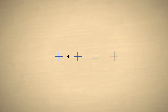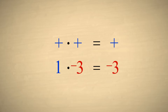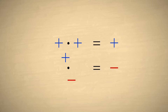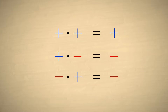Therefore, multiplying a positive number times a positive number must produce a positive result. And multiplying a positive number times a negative number must produce a negative result. Because of the commutative property of multiplication, we should be able to swap the operands and get the same result. So if either operand is negative, we must still get a negative result.